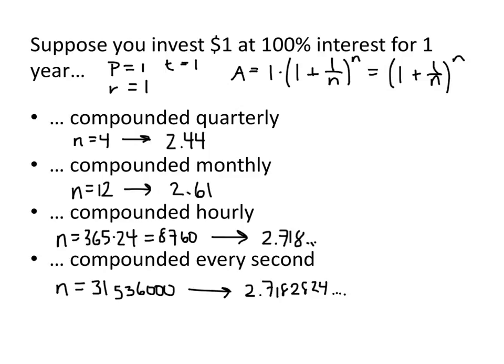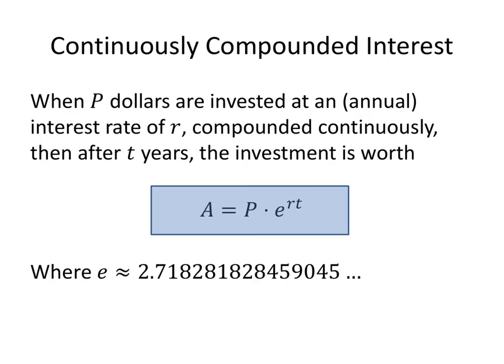And it turns out that that number 2.71828 and so on is actually an important number in mathematics, and we call that number e. And this number is relevant for what we call continuously compounded interest.